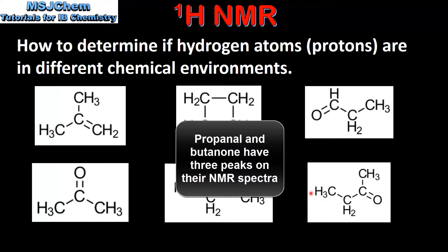Our final example is butanone. In butanone we have two CH3 groups and one CH2 group. The hydrogen atoms in a CH2 group are in a different chemical environment to those in a CH3 group. To determine if the protons in the two CH3 groups are in the same or different chemical environments we need to look at the groups of atoms to which they are bonded. The CH3 group on the left is bonded to a CH2 group, and the CH3 group on the right is bonded to a carbon which is double bonded to an oxygen. So both CH3 groups are bonded to different groups of atoms, therefore the protons in each CH3 group are in different chemical environments.